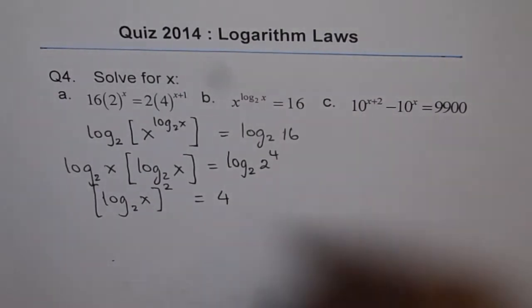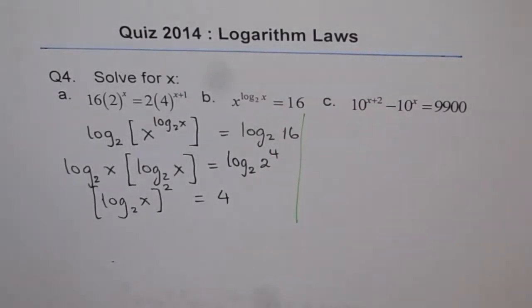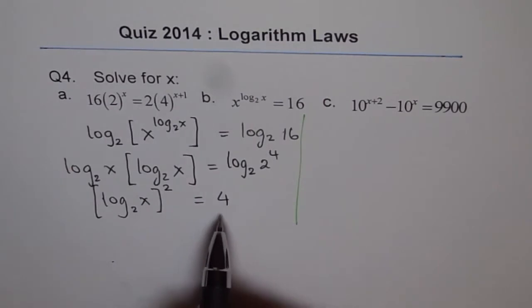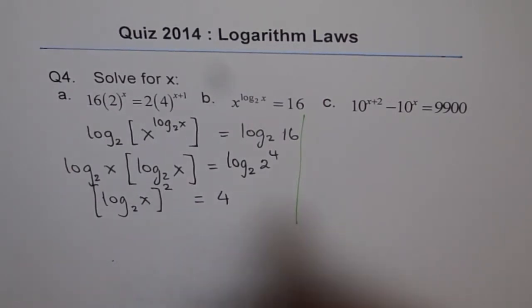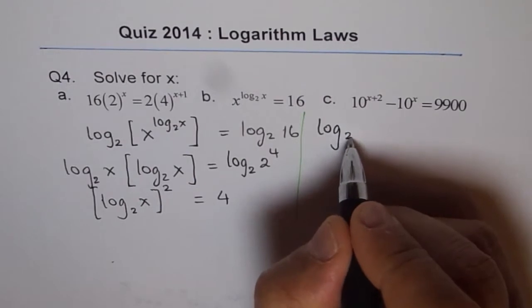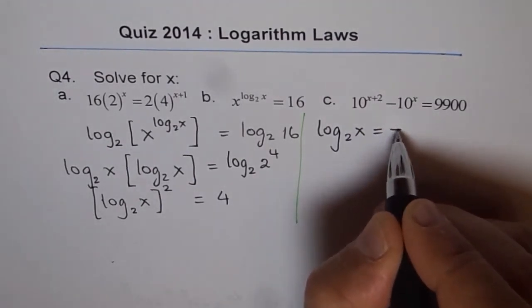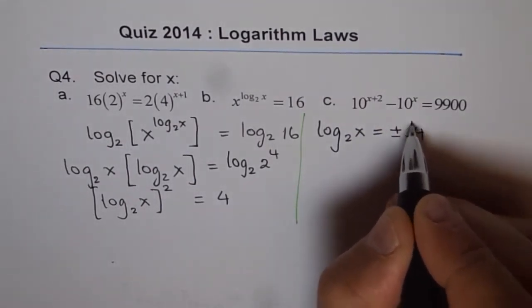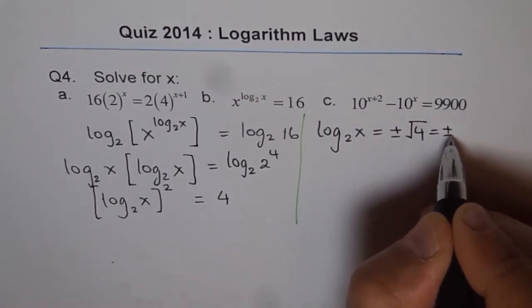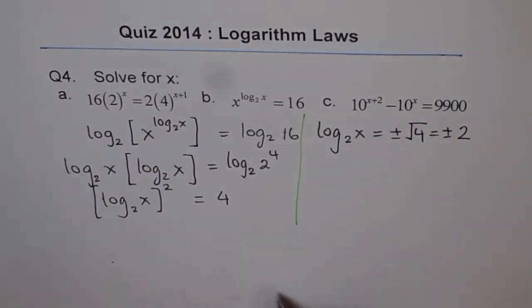And now we can solve by taking square root on both sides. So when we take square root, we get log to the base 2 of x is equals to plus and minus square root of 4, which is plus and minus of 2.